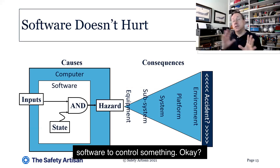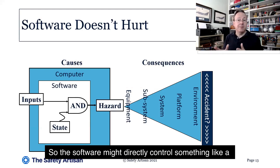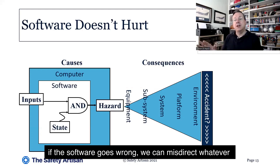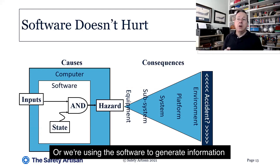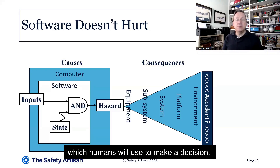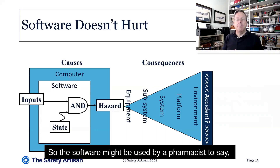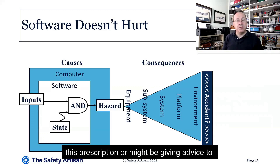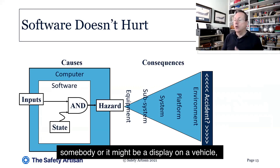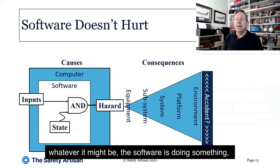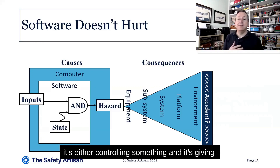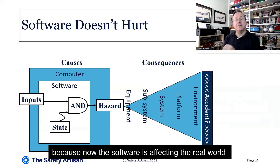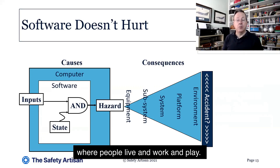Where the hazard can arise is where the outputs from the software — and ultimately from the hardware that supports it — begin to impinge on the real world. Either we're using the software to control something directly, like a vehicle, an airplane, a ship, or a nuclear reactor, and if the software goes wrong we can misdirect whatever we're controlling. Or we're using the software to generate information which humans will use to make a decision — for example, a pharmacist checking drug availability, or a display on a vehicle. The software is either controlling something or giving information to support decision making, and that is where the hazard can arise.